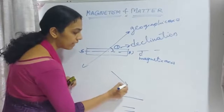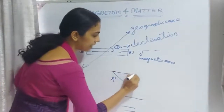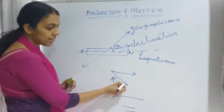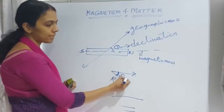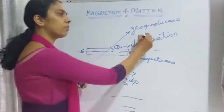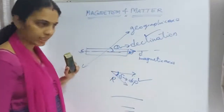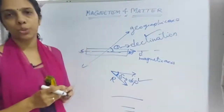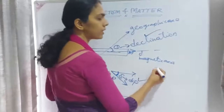Next is magnetic inclination or dip. The net effect of Earth's magnetic field is represented as R. The angle between the horizontal line drawn through the magnetic axis and this resultant R of Earth's magnetic field is called the dip or inclination. This is another magnetic element of Earth.